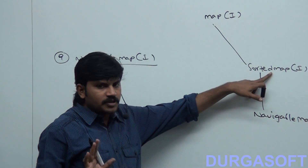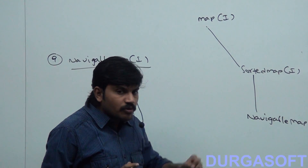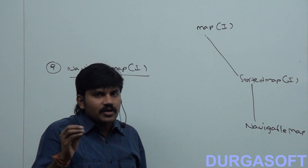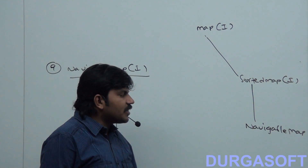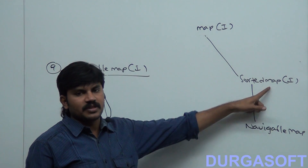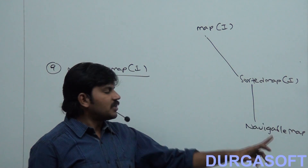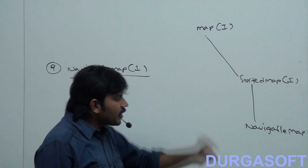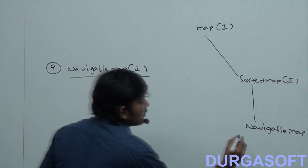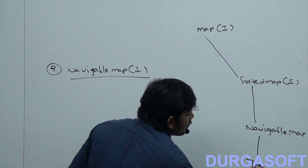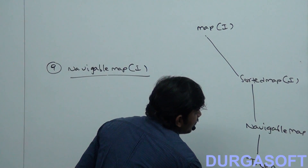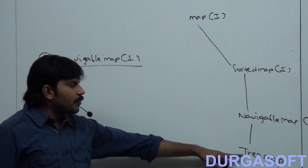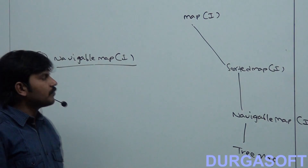Navigable Map is the child interface of Sorted Map. Navigable Map defines several utility methods for navigation purpose. Its implementation class is nothing but Tree Map. Tree Map is the implementation class of Navigable Map.